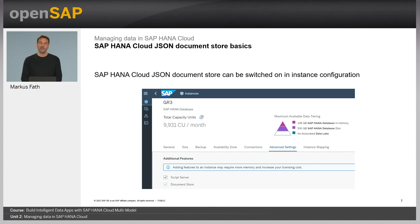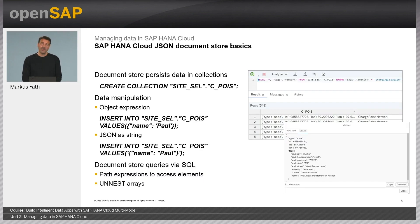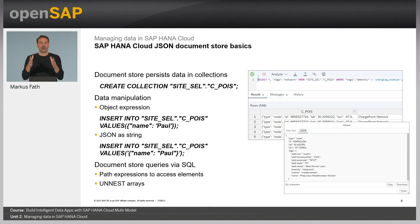One thing to note is that the JSON document store in SAP HANA Cloud is not active or enabled by default. It simply takes one configuration step to switch on the JSON document store when managing your instance through the administration user interface — essentially one tick — and then the JSON document store is enabled in your SAP HANA Cloud instance. When working with the JSON document store, we are not dealing with tables like in relational data, but with so-called collections. You can think of it as a one-column table where the complete JSON is stored in that one column.